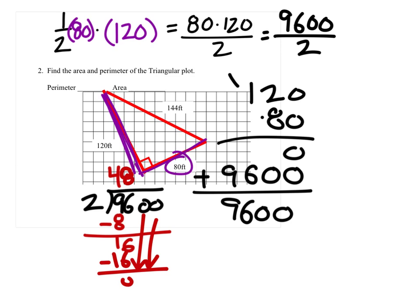When we carry down these other zeros, it won't matter. It will just be two more zeros here. So the area of this triangle, I guess we'll need that 144 for the perimeter. But the area specifically is 4,800 square feet.